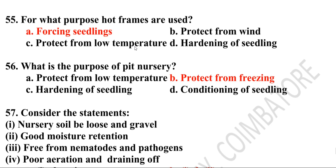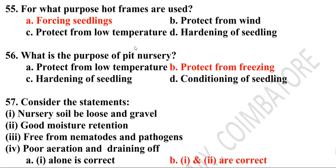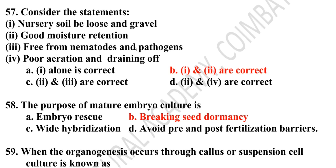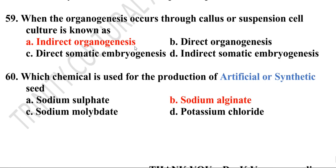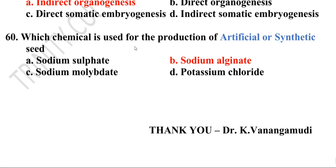Fifty-sixth question: Cold frames are used for forcing seedlings. Fifty-seventh question: What is the purpose of pit nursery? To protect seedlings from freezing. Fifty-eighth question: Nursery soil should be loose and gravel-free, with good moisture retention and free from nematodes and pathogens. Options one and two are correct — option B. Fifty-ninth question: The purpose of mature embryo culture is breaking seed dormancy. When organogenesis occurs through callus or suspension cell culture, it is known as indirect organogenesis. The chemical used for production of artificial or synthetic seeds is sodium alginate. Thank you for watching.